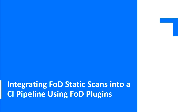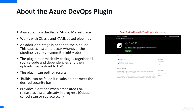Now let's get to the nitty-gritty of integration. First, using the FOD plugins available off the shelf. There's an Azure DevOps plugin available from the Visual Studio Marketplace — it works with classic and YAML-based pipelines. The concept is you add an additional stage to your pipeline, and the plugin will automatically package together all the source code and dependencies for you, then upload the payload to FOD.